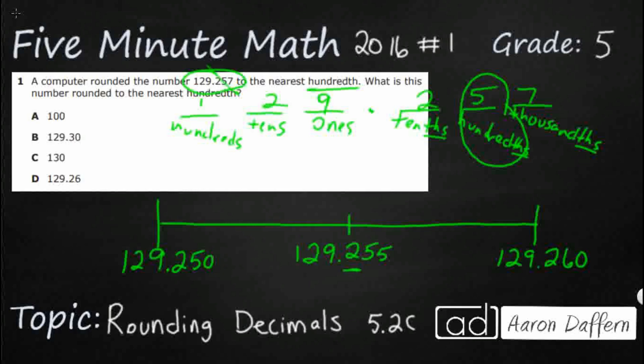And now we can more easily visualize that our midpoint is going to be 129.255 or .255 thousandths. So anything that happens to be at this midpoint or above is going to round up to 129.26. Anything that's below the midpoint is going to round down to 129.25.